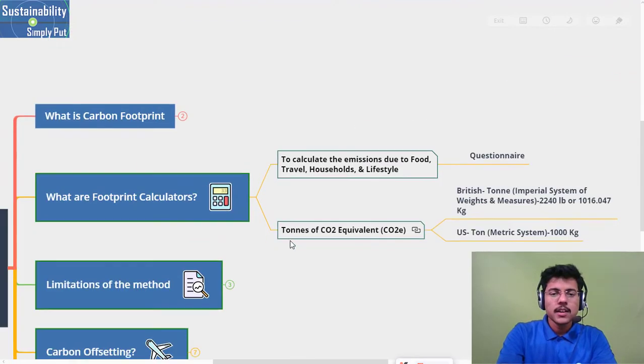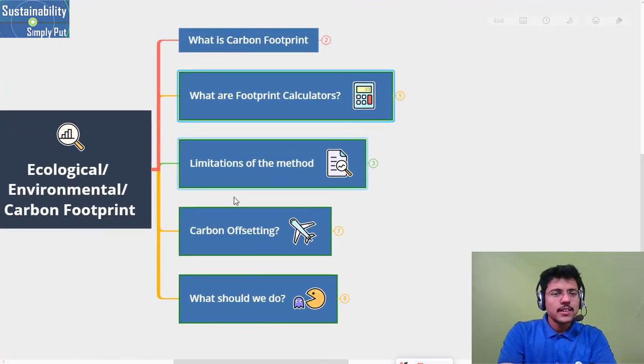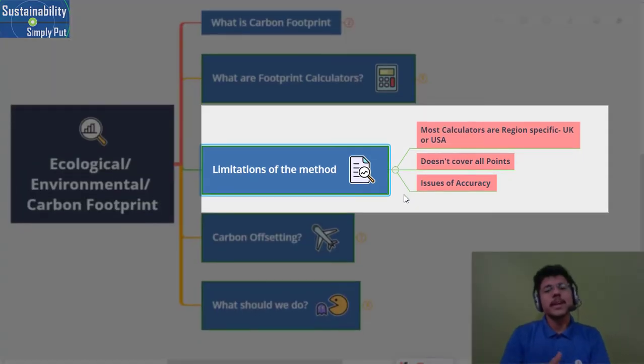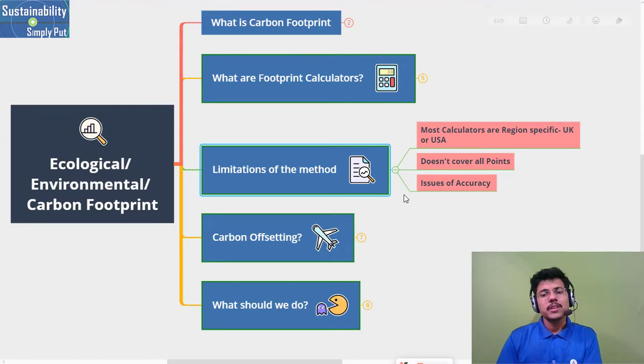Let's talk about what are the limitations of these methods. First limitation is that most of the calculators are region specific. Like WWF calculator is more specific for UK residents, many calculators are for US residents, so it becomes difficult for people from other parts of the world. These calculators don't cover all the points - some points are taken from average data. There are some issues of accuracy as well, but still these calculators are useful.